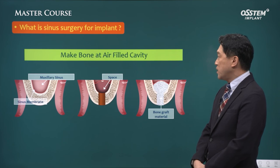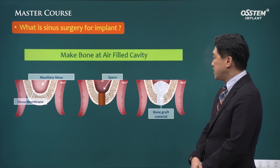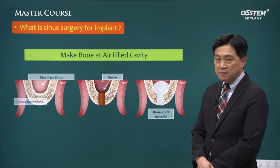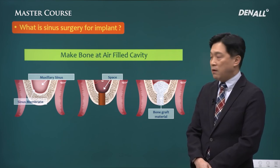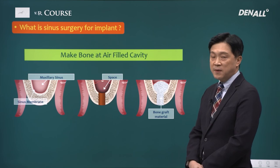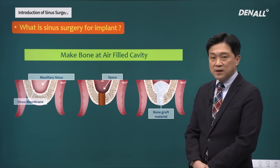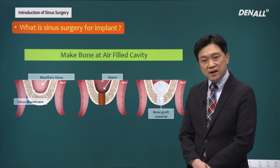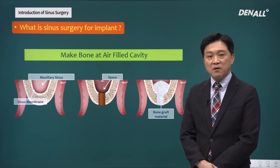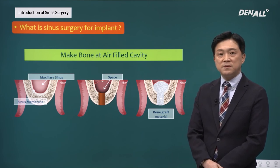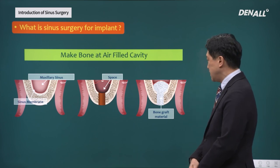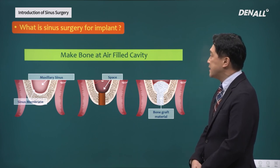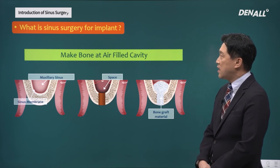Let's look at an objective diagram. Within the sinus, the membrane is detached and space is secured, and in that space, graft material or a blood-filled cavity is formed to regenerate the bone. This refers to sinus surgery.